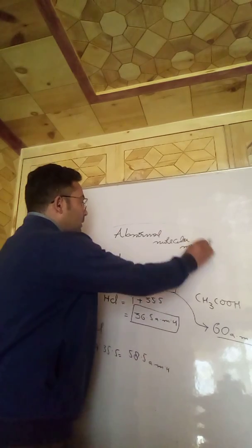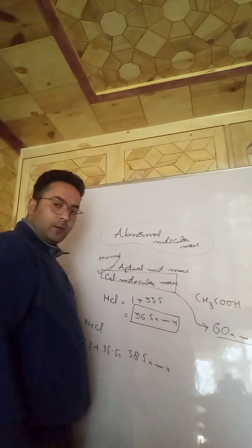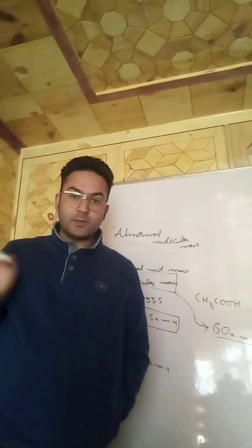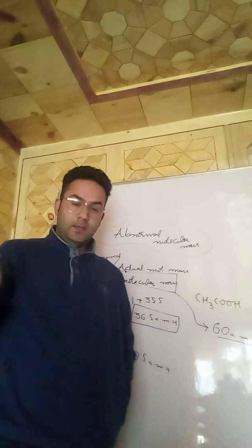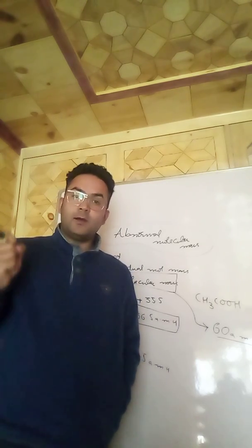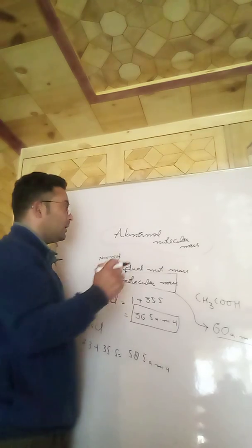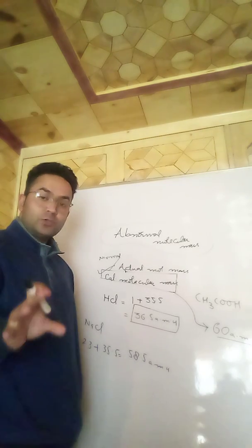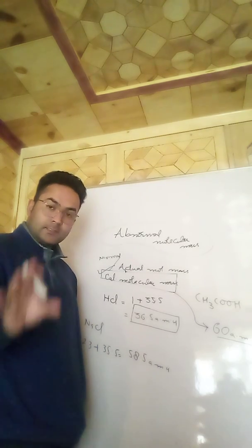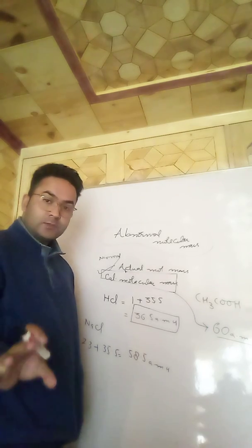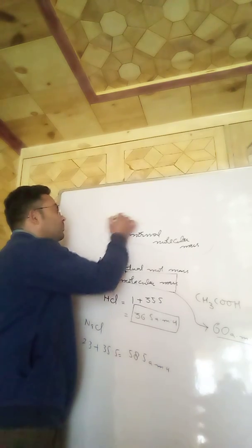But if we talk about abnormal molecular mass — what is it? We have studied colligative properties such as depression in freezing point, elevation in boiling point, relative lowering of vapor pressure, and osmotic pressure. Using these colligative properties, we can determine the molecular mass of a solute in solution.